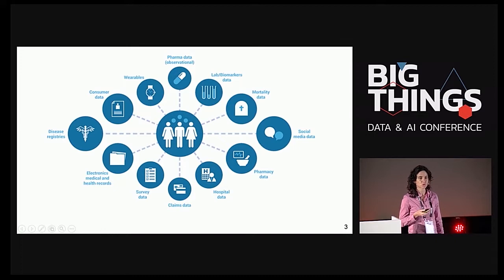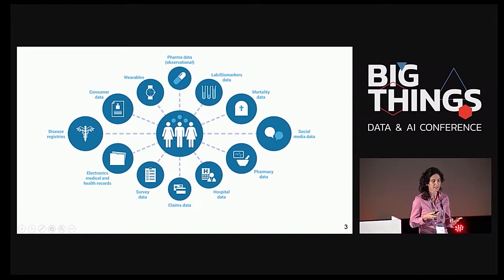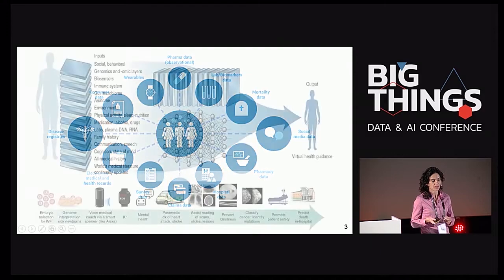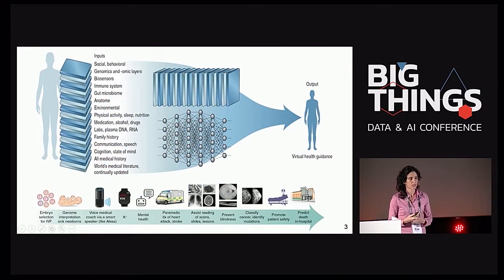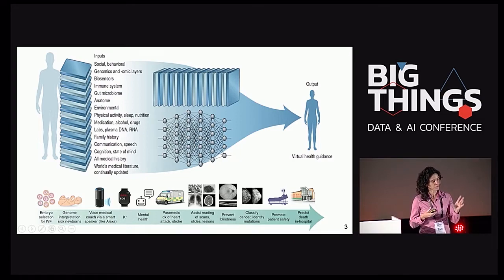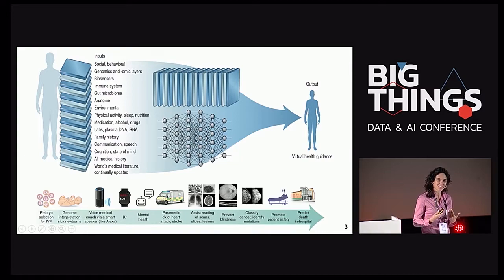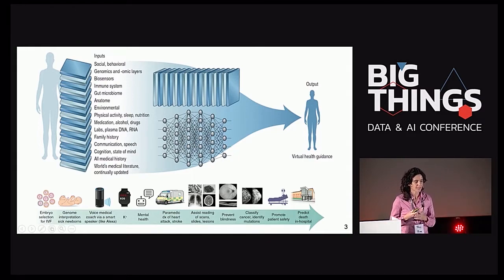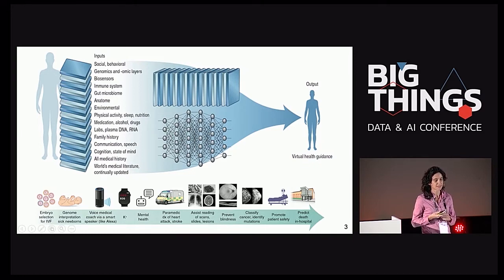En medicina tenemos muchísimos datos, una gran riqueza: desde todo lo que son sensores, registros de enfermedades, historias médicas, datos de pólizas de seguro, datos de los hospitales, datos de mortalidad, datos de imagen. Podemos ver desde todos los ángulos la salud y el cuerpo humano. Tenemos las herramientas necesarias para representar estos datos multimodales y, por primera vez, representarlos de una manera que tienen significado biológico en sí mismo. Podemos introducirlos en los modelos neuronales y llegar a tener una guía virtual de la salud.